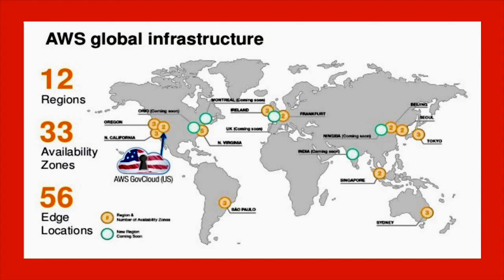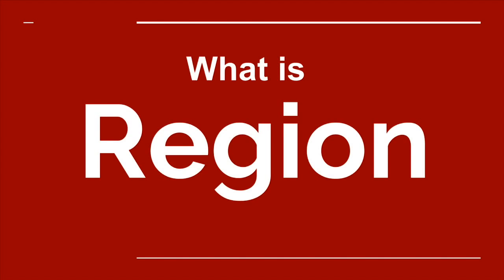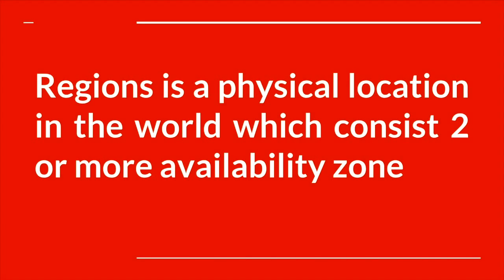Globally, there are 3 or 4 regions in the USA, some regions in Europe, and regions in the Asia Pacific — you can see the details in a graph. New regions are created based on requirement and traffic load. A region is a physical location in the world which consists of two or more availability zones.